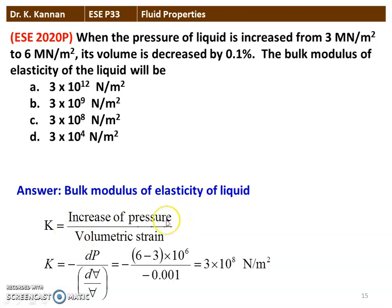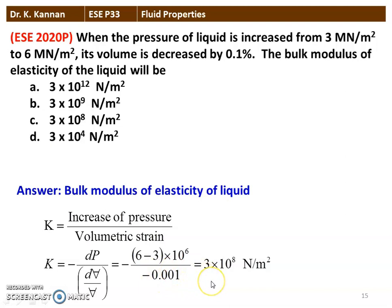K is equal to the increase of pressure divided by the volumetric strain: K = −dP / (dV/V). So, the change in pressure is 6 − 3 = 3 × 10⁶ N/m², with 6 MN/m² as final pressure and 3 MN/m² as initial pressure. The volumetric strain is −0.001 (decrease in volume). Calculating: K = 3 × 10⁸ N/m². The correct answer is option C: 3 × 10⁸ N/m².